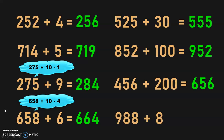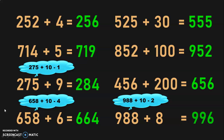The last sum in this section: 988 plus 8. Quickly add 988 plus 10, which is 998, and subtract 2. So, the answer is 996.